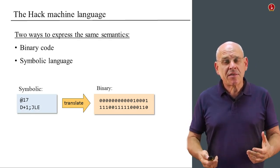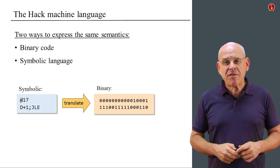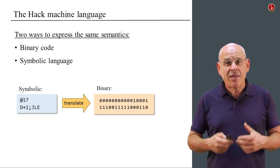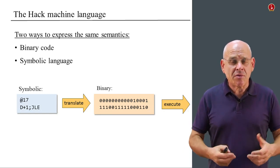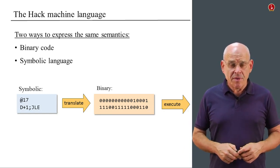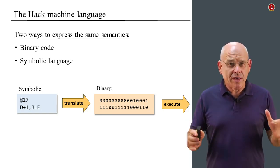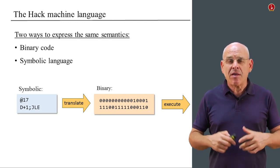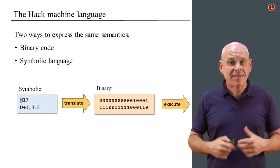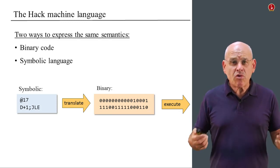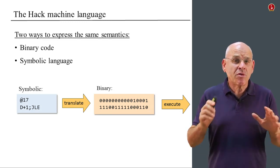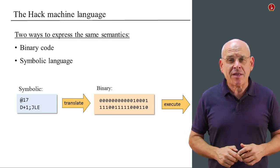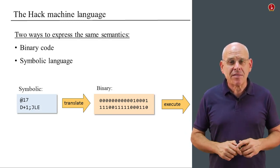Once you do this, once the program is specified in binary codes, you can actually take this code, load it into the computer, and actually execute the code on the computer. Now, we're going to spend a whole week talking about this translation and about a very special program called an assembler. So I'm not going to spend too much time discussing the translation process, but I just want you to know that it's a challenge that has to be met somewhere when you build this computer.